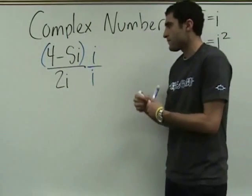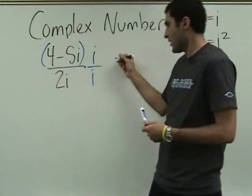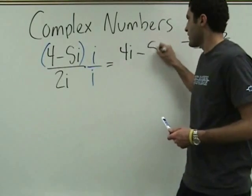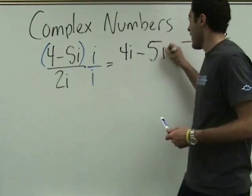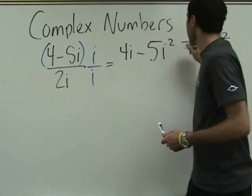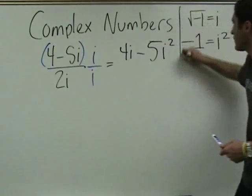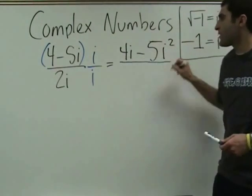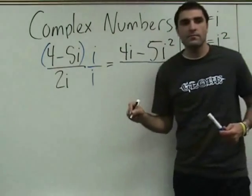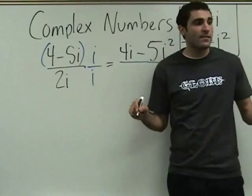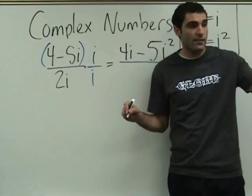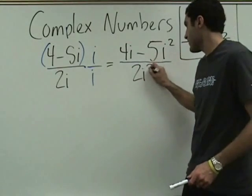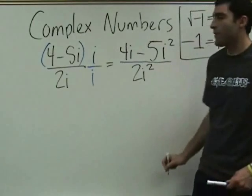4i minus 5i squared. Over — volunteer to do the bottom — 2i squared. Correct.